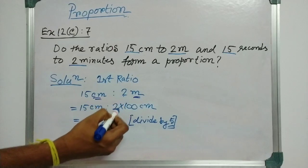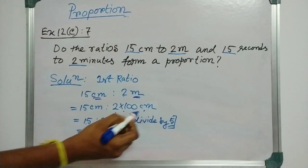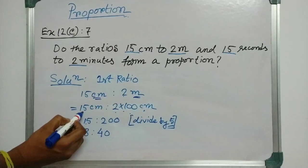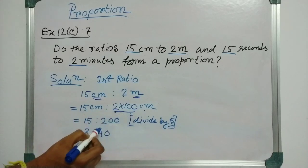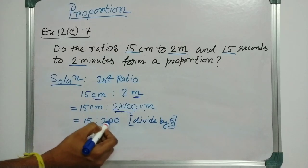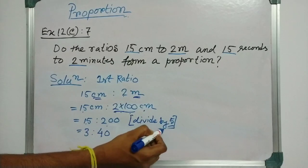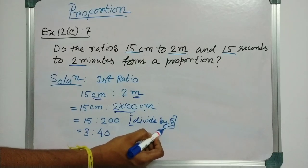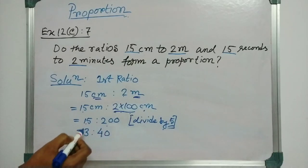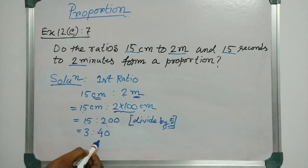So, 2m equals 2 into 100 centimeters. That is why we get 15 is to 200, and if we divide 15 and 200 by 5, because 5 is a common divisor for both of them, this is 3 and this will become 40.